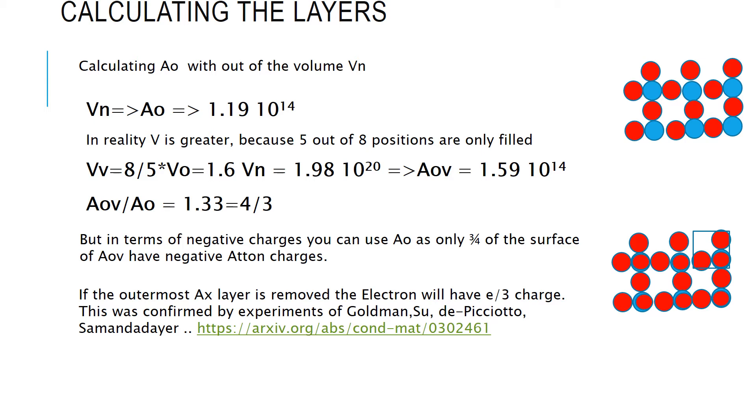So, the interesting thing here is that, since, as you've seen, we have three negative electrons on the outside, fundamentally, the A0 becomes the number of atoms on the surface that actually create the negative charge of the electron. So, if you have the electron charge, you have to actually use the A0 to come up with the correct individual atom charge, which I have done a long time ago, and I've been consistently using that, and not using A0V and then dividing by 1.33. So, in terms of negative charges, you can use A0 as only three-quarters of the surface of the A0V have negative atom charges. I hope that is pretty clear.